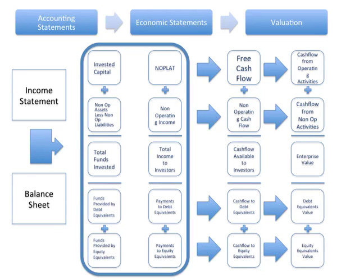As part of this methodology, we're going to start with accounting statements — income statements and balance sheets — and map those out to match the economic statements, which are really mapped to the Modigliani-Miller model. It doesn't matter which statement we convert first. We have to do both, and we need to convert both the income statement and balance sheet in order to get to the cash flow statement and eventually the valuations.